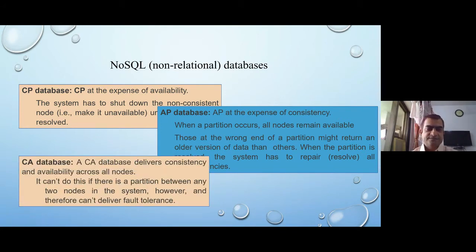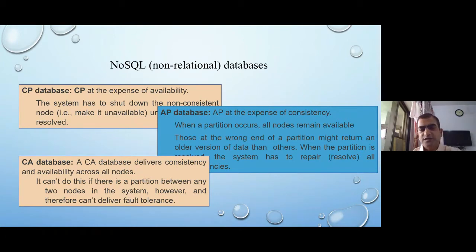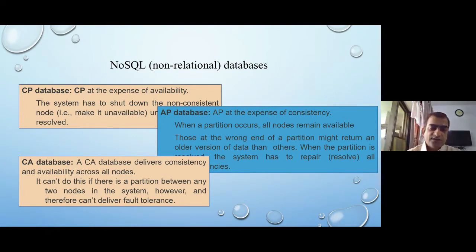A CA database delivers consistency and availability. But as soon as there is a partition between any two nodes, both C and A become impossible simultaneously. So CA databases belong to traditional non-distributed or partially replicated systems. When I say CA, partition tolerance is not possible, so it cannot deliver fault tolerance. RDBMS is fundamentally strong at consistency, and that is why for transactional databases we still stick with RDBMS. In non-relational systems the goal is P and A.